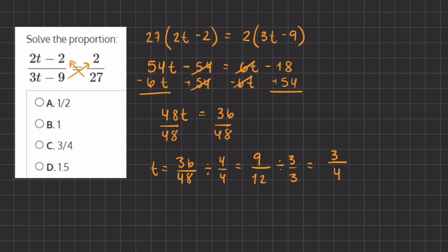So our final answer for t is 3/4 once we've simplified our fraction, which corresponds with answer C. So C will be our final answer.